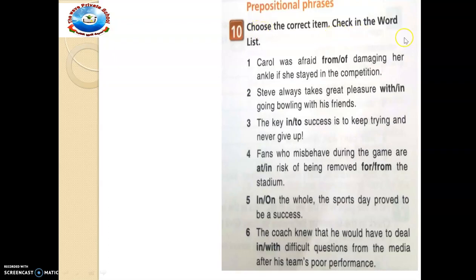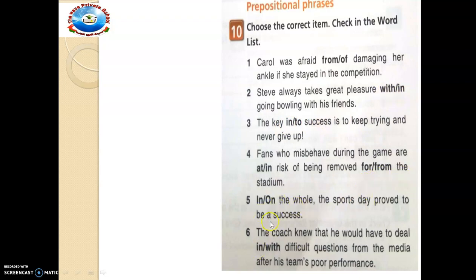Here it says choose the correct item, and check in the word list. Carol was afraid — from or of — damaging her ankle if she stayed in the competition. Which is the correct item? Is it of, from, with, in, to, for, or on? I want you to pause this video and try it out, then you can compare your answer.